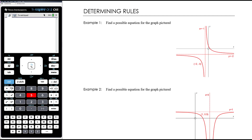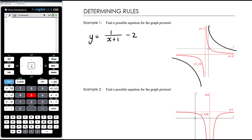Example one: we clearly have the graph of a hyperbola, and we can clearly see what the translations are based on the asymptotes. We've gone to the left by one based on the vertical asymptote, and down by two based on the horizontal asymptote. So our equation is going to be one over x plus one, minus two.